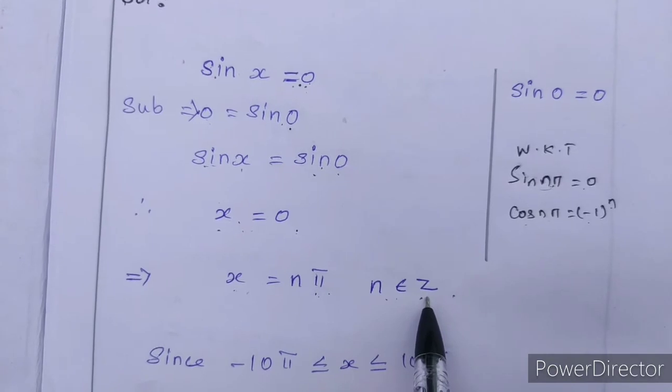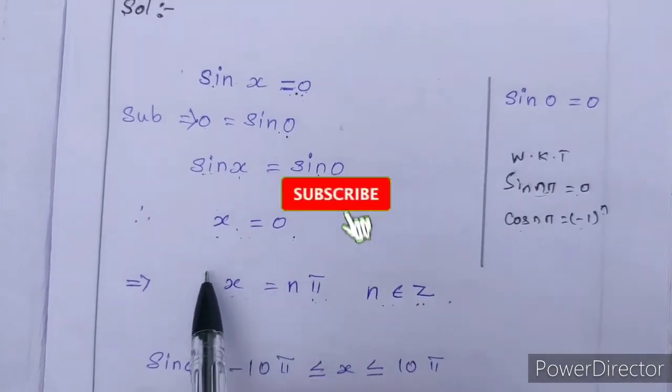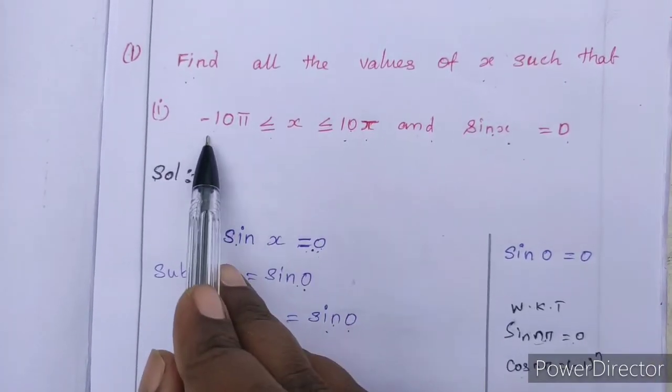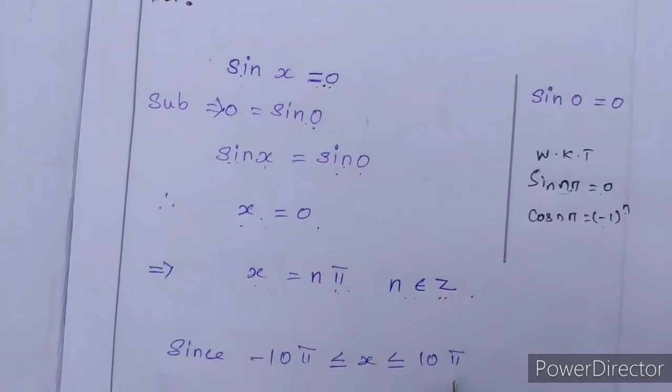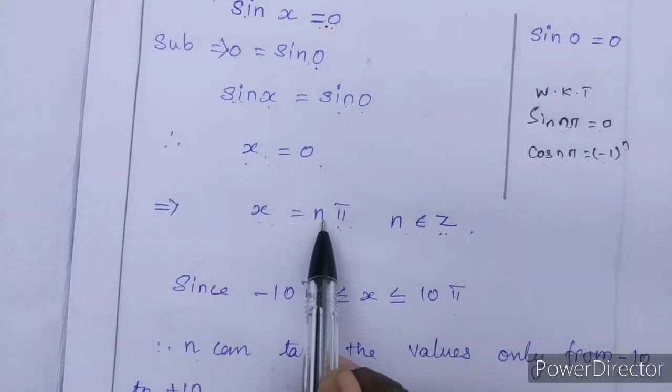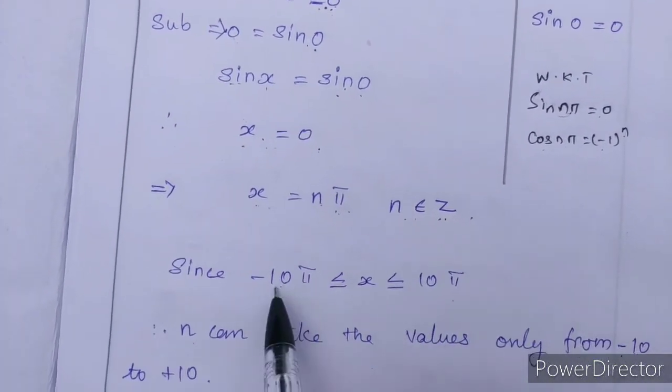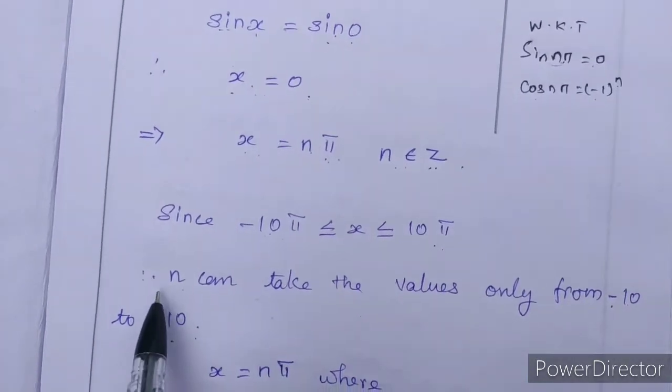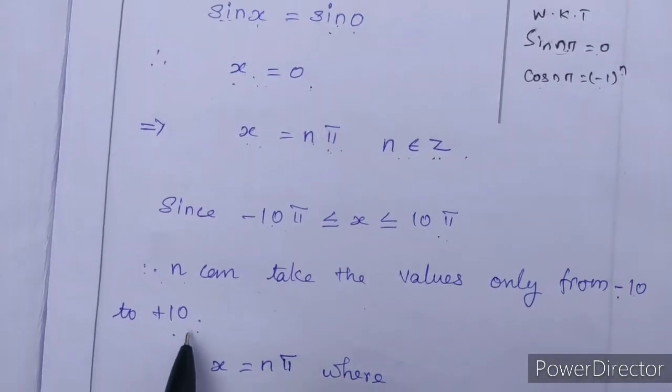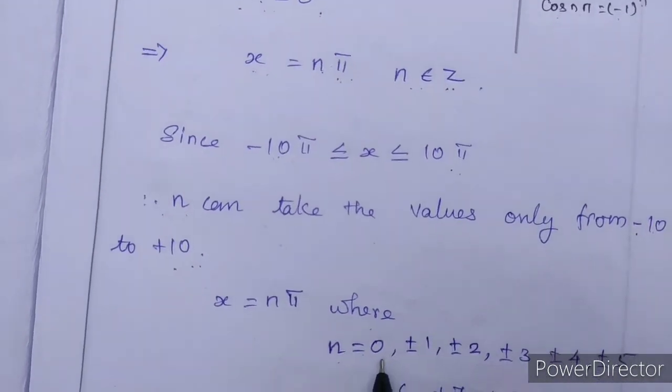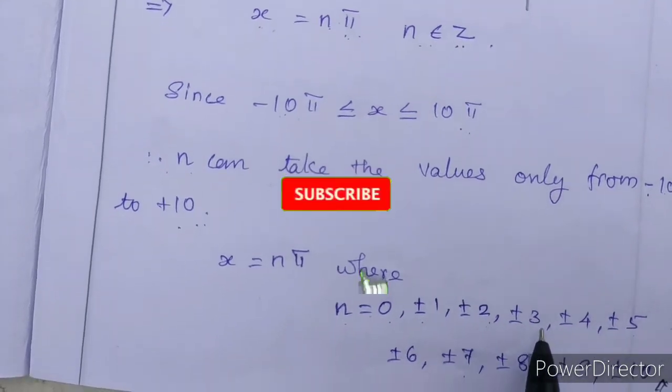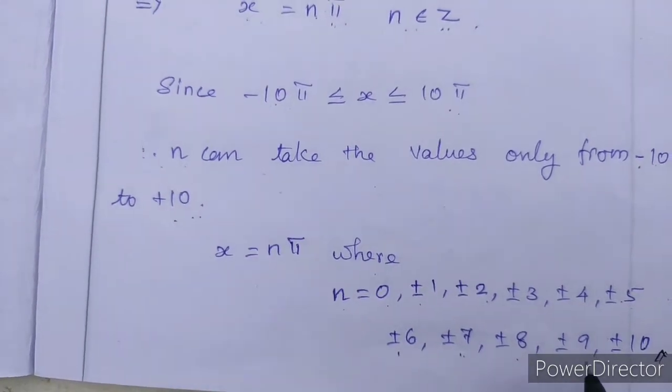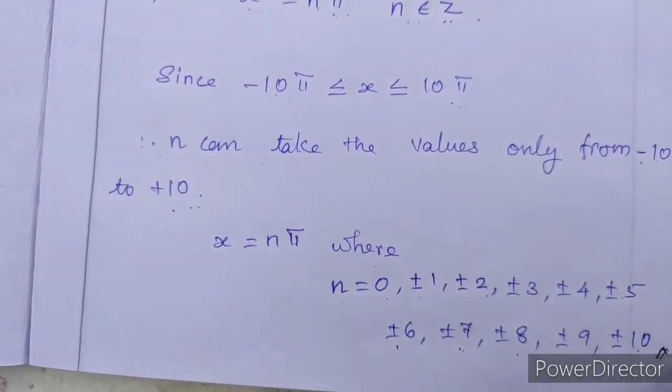So x = nπ, and n belongs to the set of all integers. Since -10π ≤ x ≤ 10π, n can take all the values from -10 to +10. So n = 0, ±1, ±2, ±3, ±4, ±5, ±6, ±7, ±8, ±9, ±10. These are the values of n.